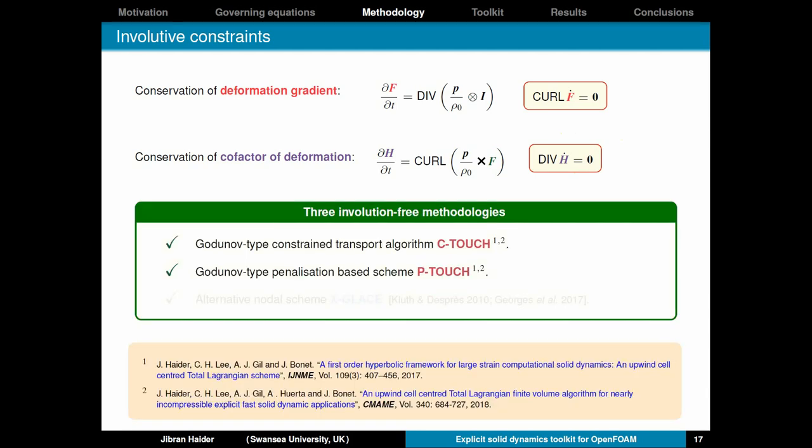So, we have got three involution-free methodologies. The first two concern the Godunov type method. The first one is based on a constrained transport algorithm and the other one is based on a penalization scheme. To find out more about these schemes, you can refer to these two papers. The third one is an adaptation of the nodal Glace scheme. So, we call it the extended Glace scheme and it fulfills involutions by construction. To find out more about the Glace scheme, you can refer to these papers.